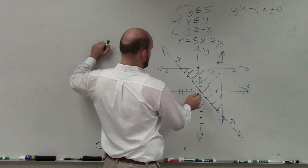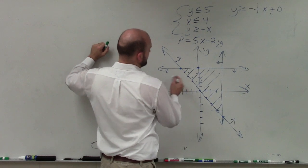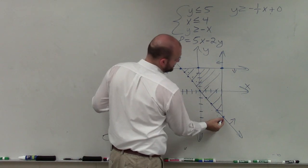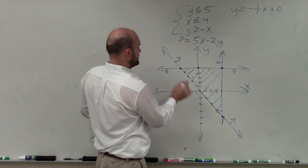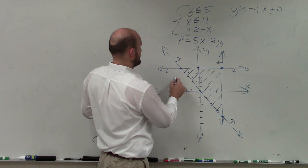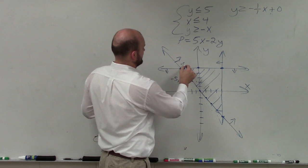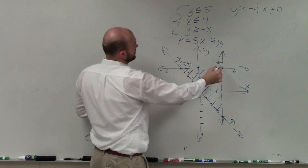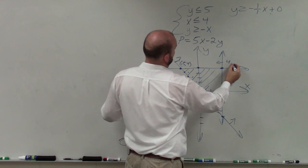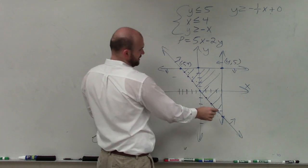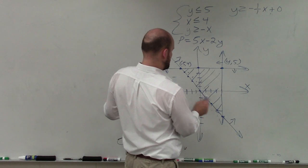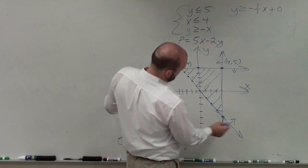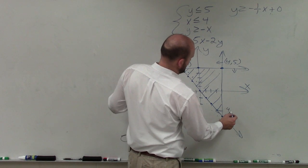So that point is at negative 5, 4. Now we need to write in all of the coordinate points — all the vertices where our lines intersect. Here I have negative 5, so negative 5 comma 4. Here I have x equals 4, y equals 5. And over here I have x equals 4, y equals negative 4. So 4 comma negative 4.